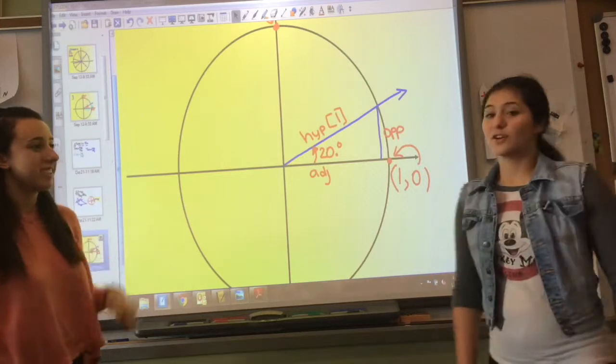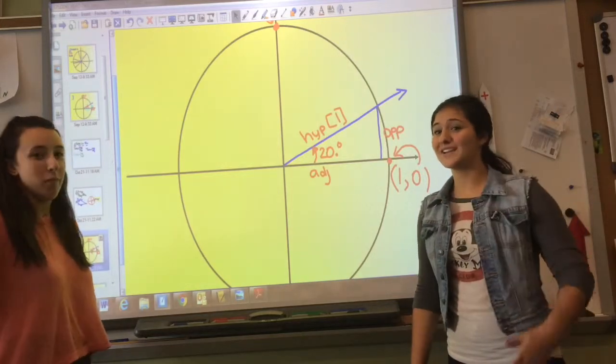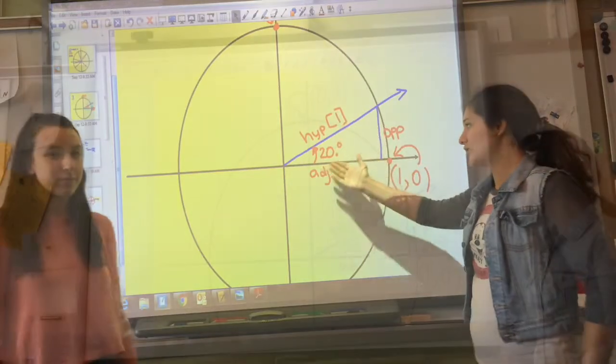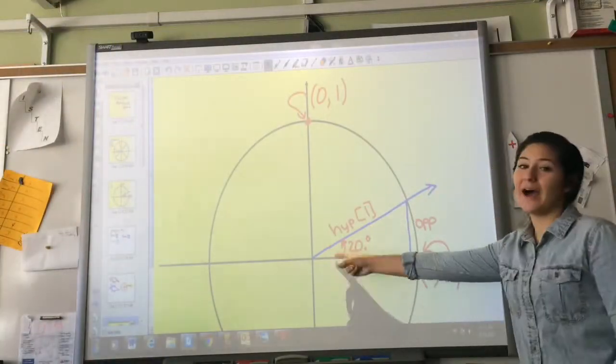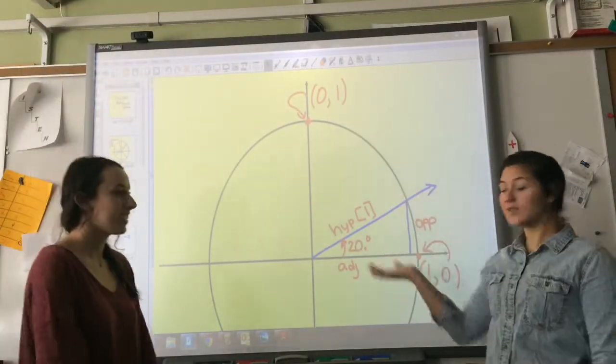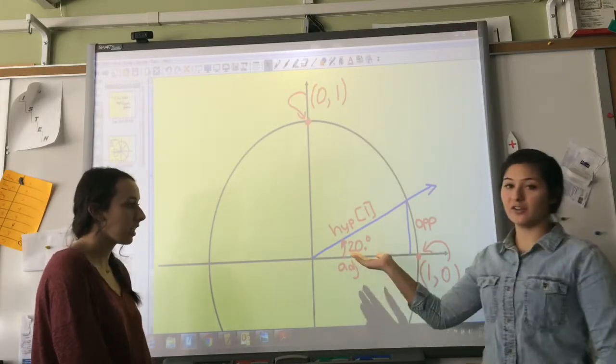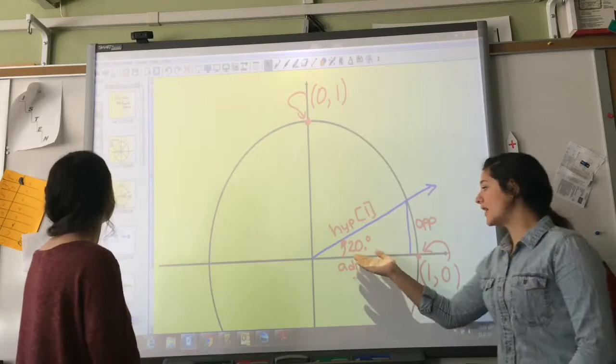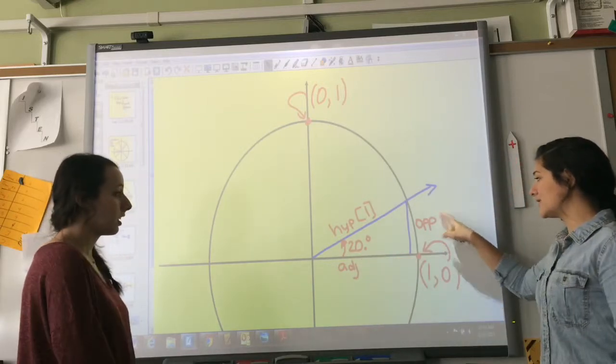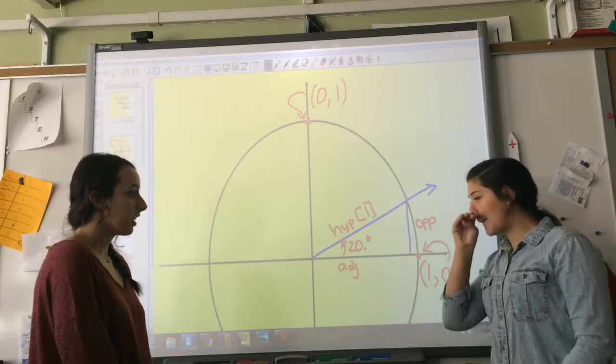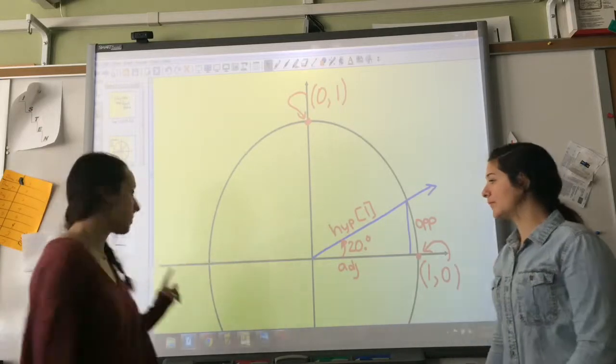So for example, you have your hypotenuse is 1, and you are on the unit circle. And in this case, we have our angle is 20 degrees. And so we see the opposite side, which is here, which is our y, the adjacent, which is the x. And the hypotenuse is always 1.